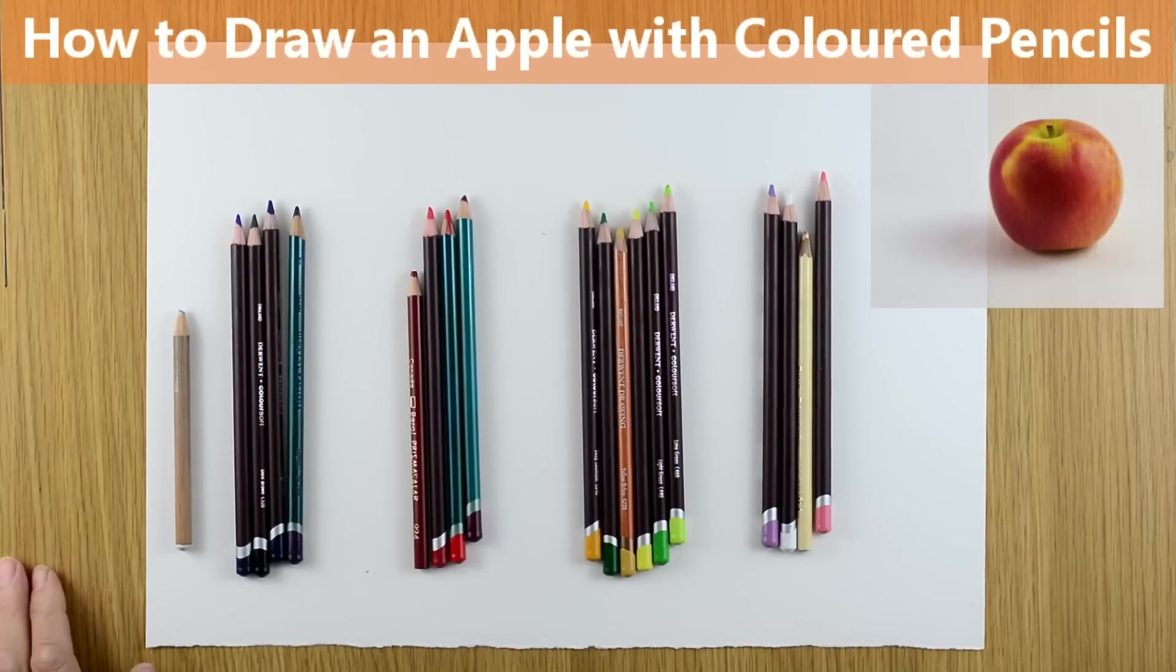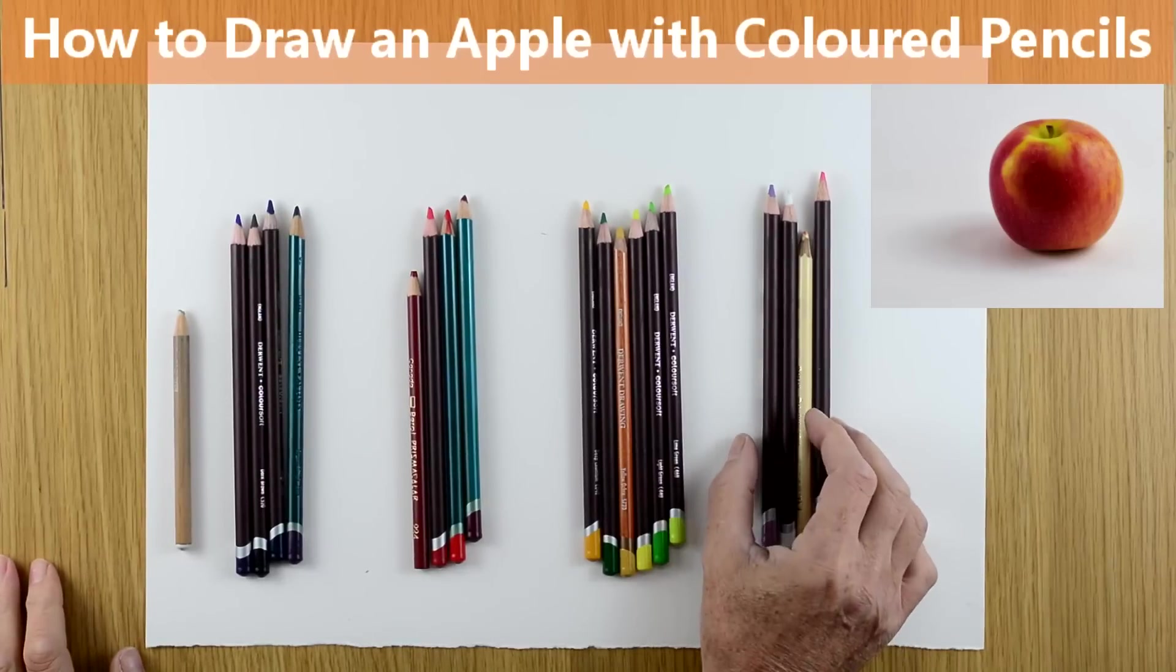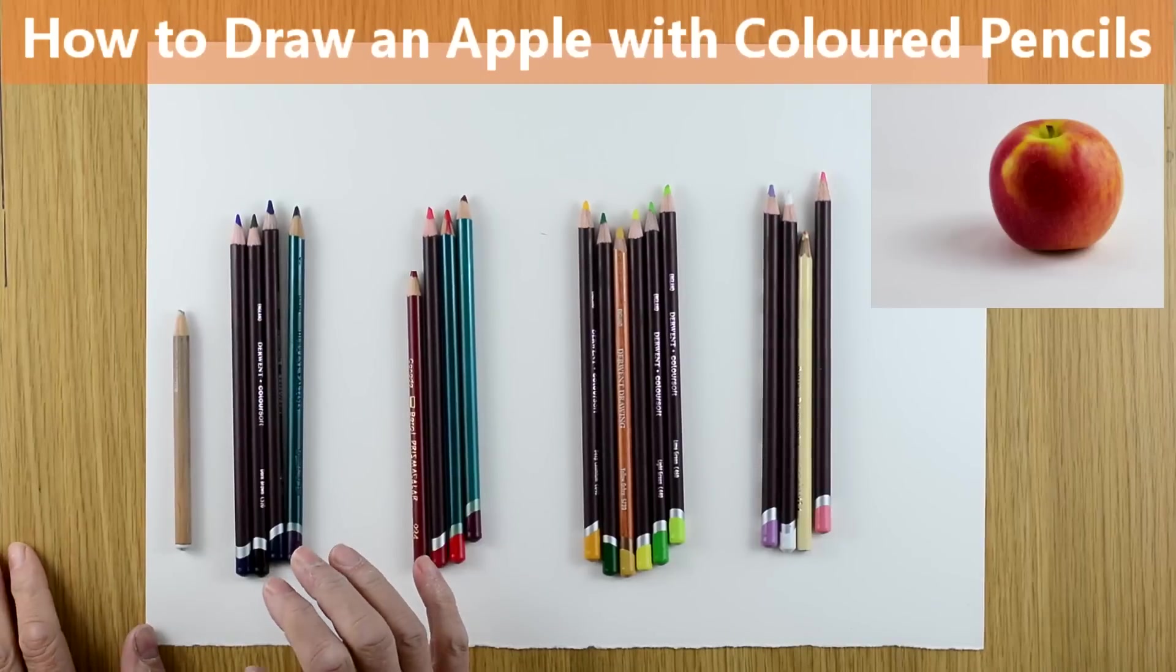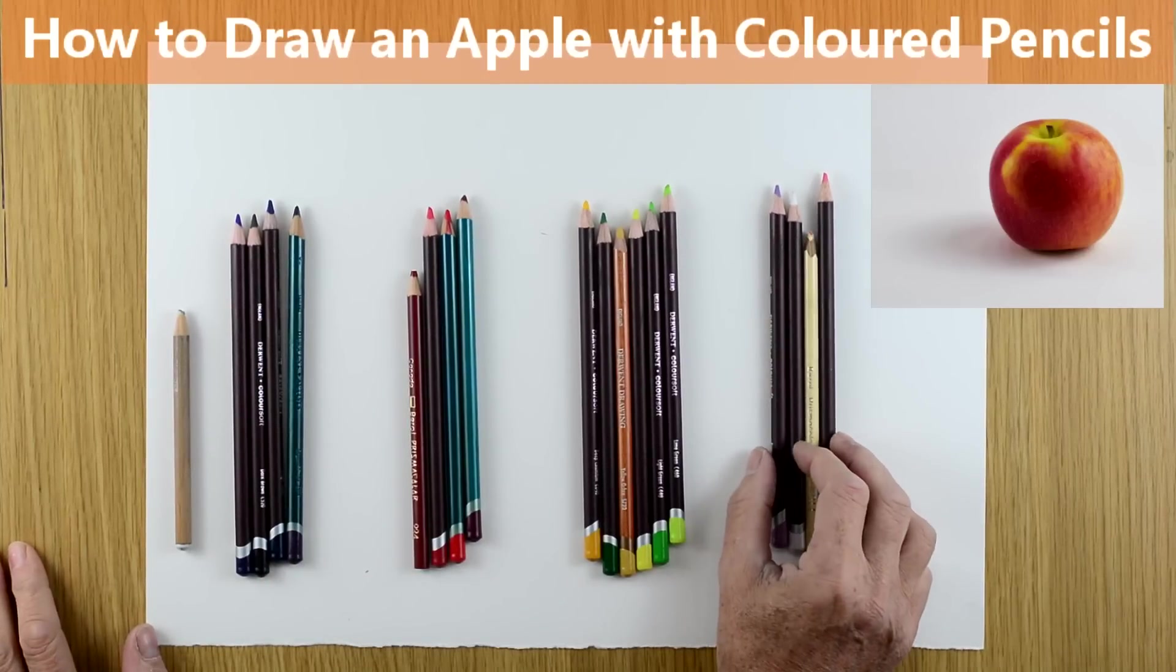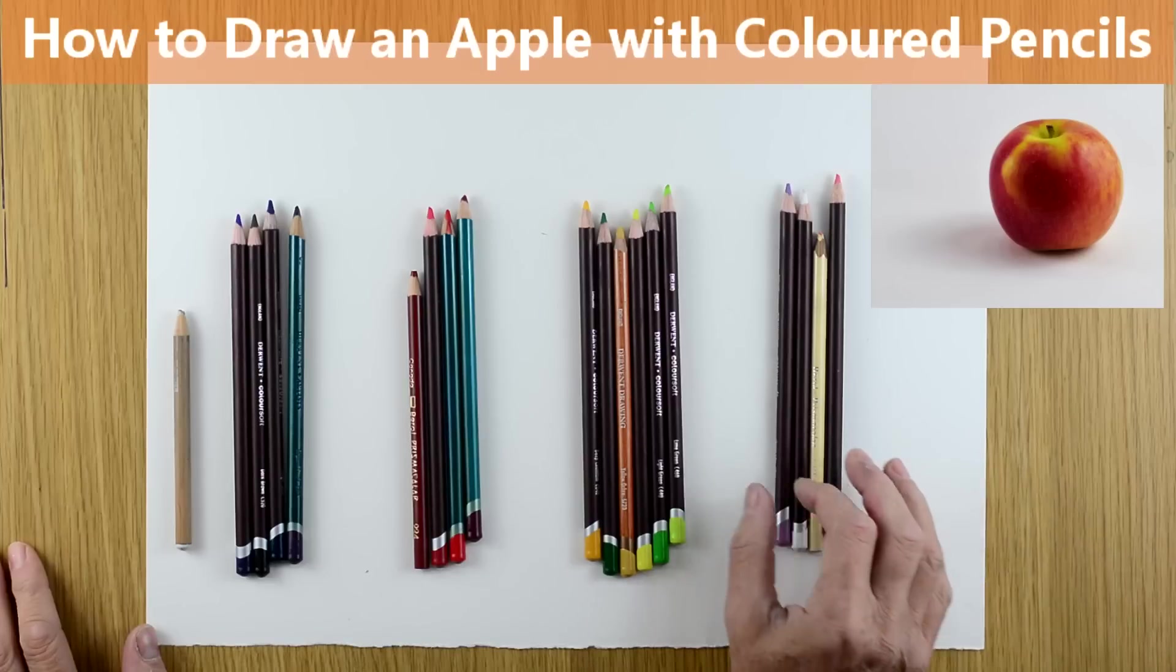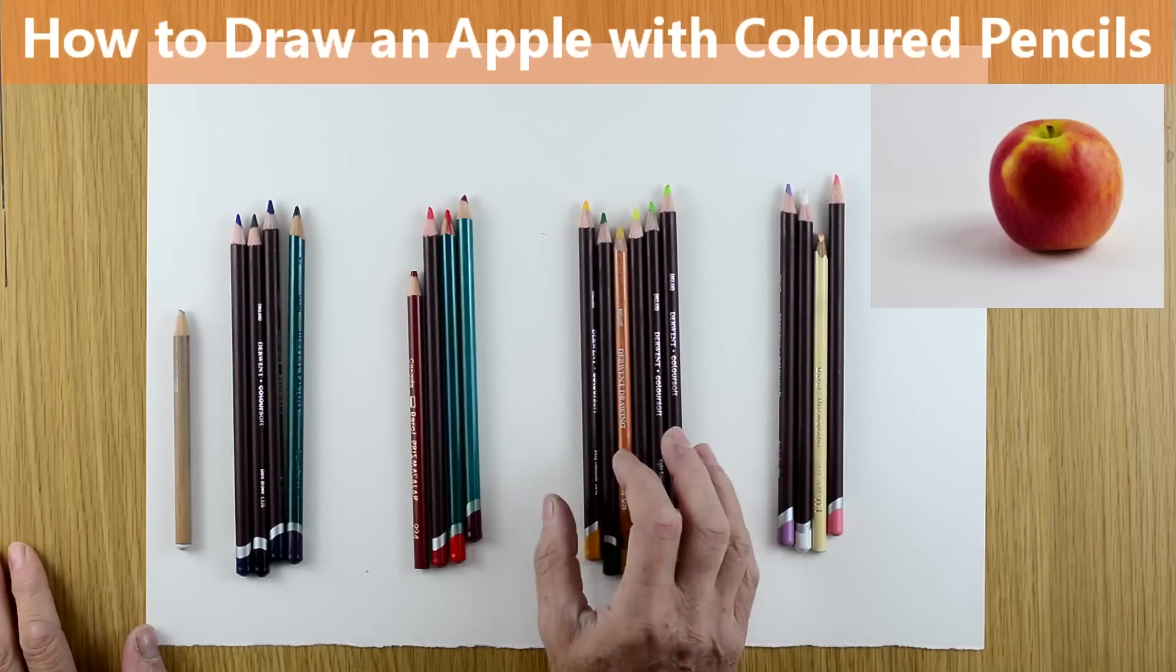I've looked at the apple and I've decided to group my pencils. It's always a good idea to do this so you've got some control and organization over your drawing. Here I've got my light tones, the pinks, the whites and such like. Here I've got the green tones.